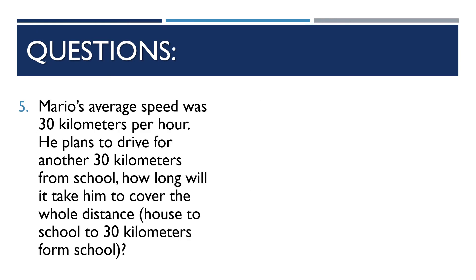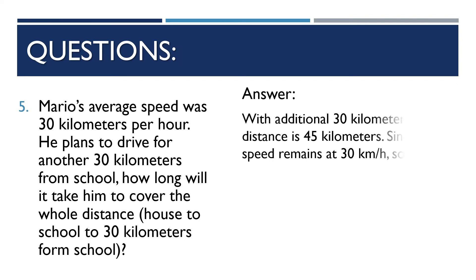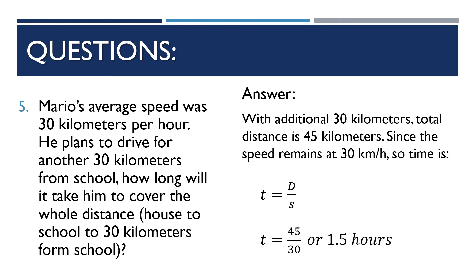Question 5: Mario's average speed is 30 km/h. He plans to drive an additional 30 kilometers from school. The total distance is now 45 kilometers. Using T = D/S: T = 45/30 = 1.5 hours. So it will take Mario 1.5 hours to cover the entire distance from his house to 30 km past school.